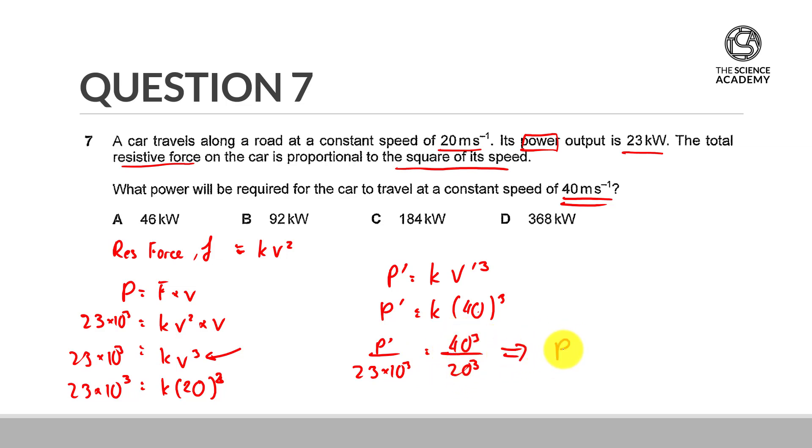In solving for p, we get 184 kilowatts. The answer is C.